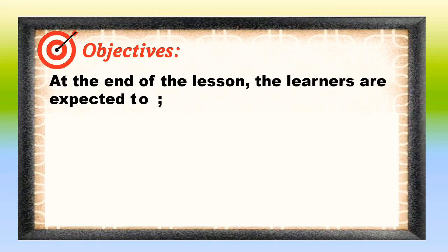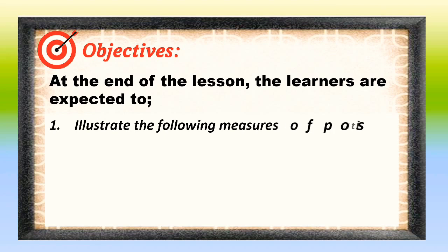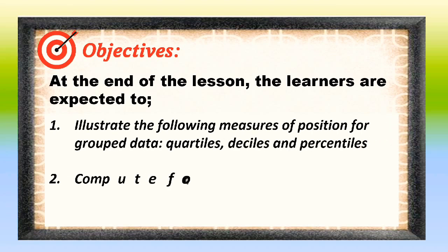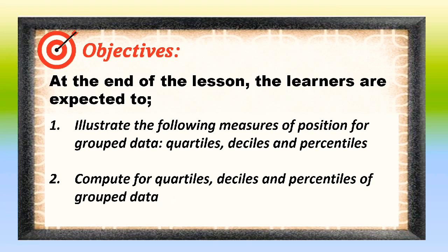Let's get to know first the following objectives. At the end of the lesson, the learners are expected to: one, illustrate the following measures of position for group data — quartiles, deciles, and percentiles; and two, compute for quartiles, deciles, and percentiles for group data.